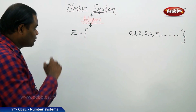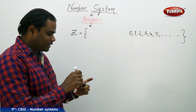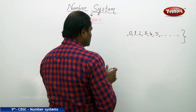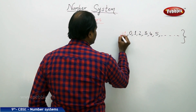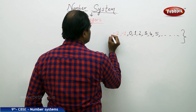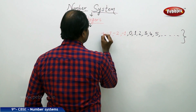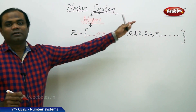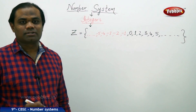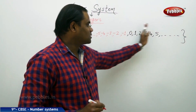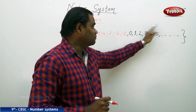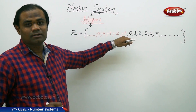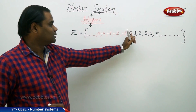Integers also include the negative part. If we have all the positive numbers on the right side, then we have all the negative numbers on the left — minus 1, minus 2, and so on. This frames the complete set of integers, with the positive natural numbers on the right and the negative natural numbers on the left, divided by 0.